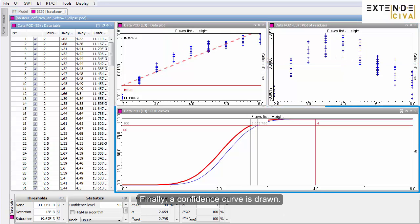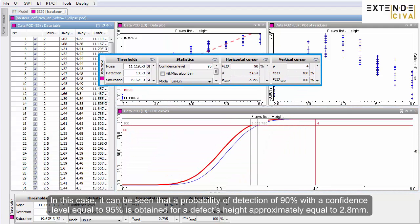Finally, a confidence curve is drawn. In this case, it can be seen that a probability of detection of 90% with a confidence level equal to 95% is obtained for a defect's height approximately equal to 2.8 mm.